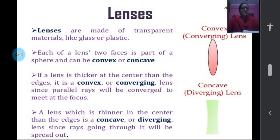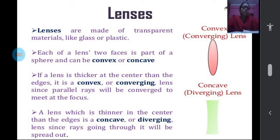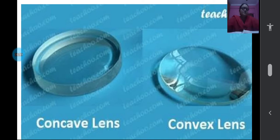A concave lens is thinner in the middle and thicker at the edges. Due to this shape, whether the lens is going to magnify the image or form a real or virtual image depends upon this shape. Lenses are spherical glasses, and due to the process of refraction, when light rays are made to pass through these lenses, they will bend. You can touch anyone's spectacles or a magnifying glass at home to see — a concave lens is thinner at the middle and thicker at the edges, and a convex lens is thicker at the middle and thinner at the edges.